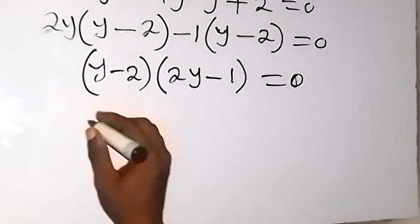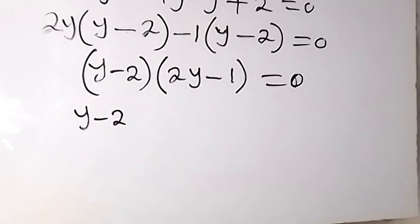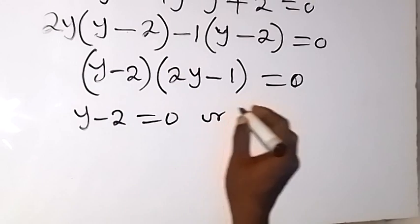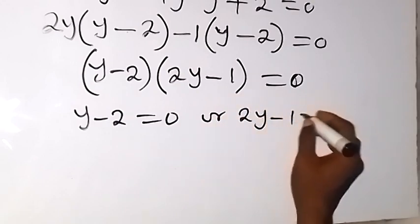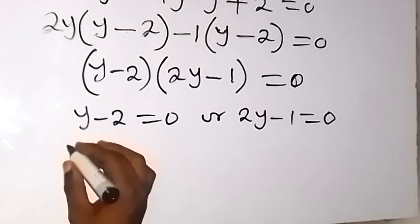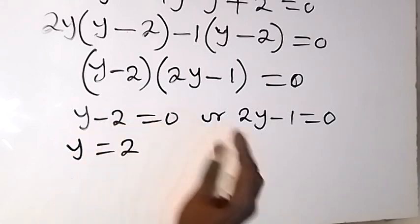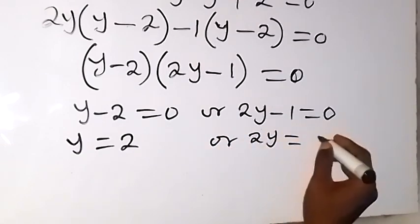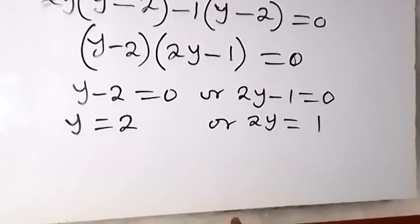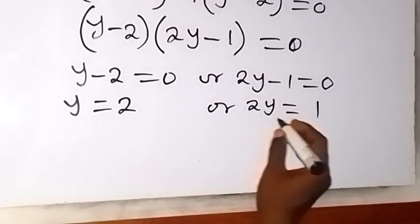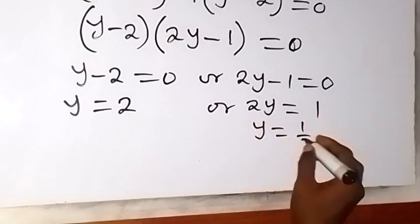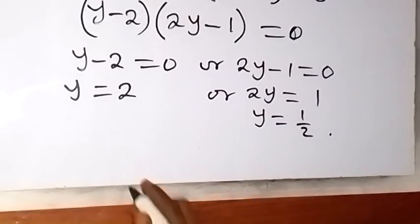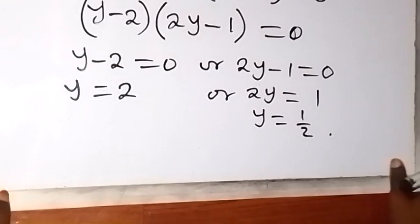Since the product equals zero, either factor can be zero. So y minus 2 equals 0, giving y equals 2, or 2y minus 1 equals 0, giving y equals 1 over 2. Our y values are y equals 2 and y equals 1 over 2, and recall that y is 4 raised to power x.